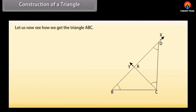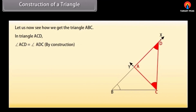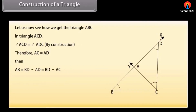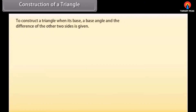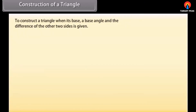To verify: in triangle ACD, angle ACD equals angle ADC by construction, therefore AC equals AD. Then AB equals BD minus AD equals BD minus AC, so AB plus AC equals BD. Since the sum of two sides of a triangle is greater than the third side, ABC is a valid triangle. Now we will construct a triangle when its base, a base angle, and the difference of the other two sides is given.